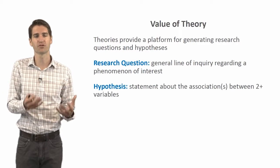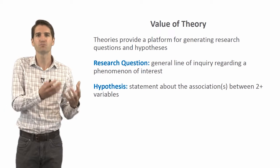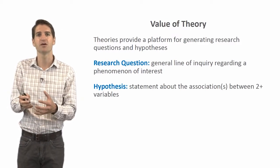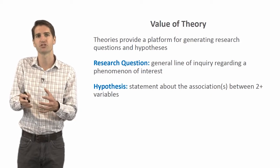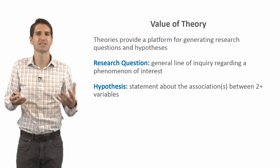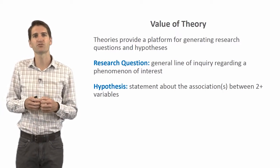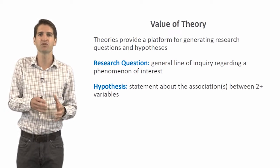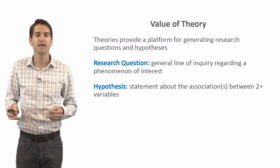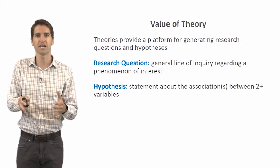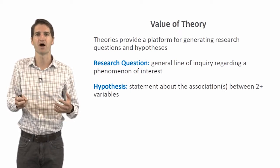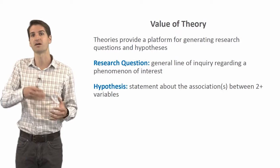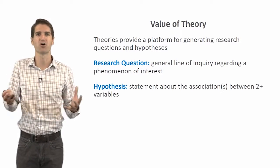In terms of the value of starting with theory when it comes to question formulation, theories provide a platform for generating research questions and/or hypotheses. Through those sets of propositions about the phenomenon, you can anticipate and plan what types of research questions and hypotheses to ask. Research questions tend to be more broad and exploratory — a general line of inquiry regarding a phenomenon of interest. A hypothesis, on the other hand, is a statement about the association between two or more variables. It tends to be more definitive and specific, describing not just what the association is, but also the nature of that association — positive or negative relationship, large or small difference.